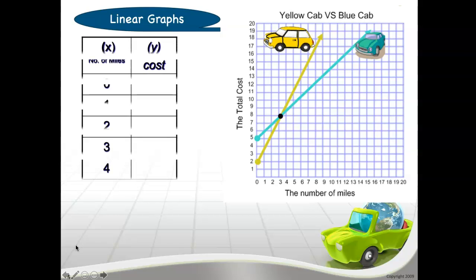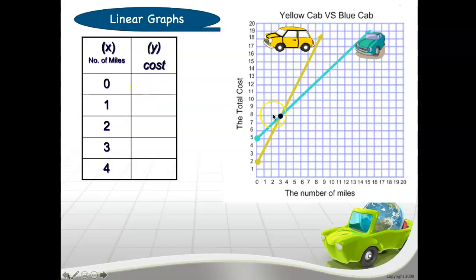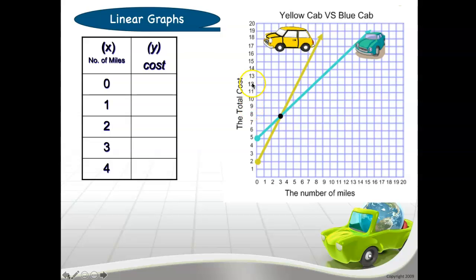Let's look at our table. I am using a vertical table. Let's look at the number of miles and cost. You will be able to see here that there are two taxi cab companies — one is yellow and one is blue. X is the number of miles, so if you look at the X axis, you have the number of miles, and the Y axis is the total cost.